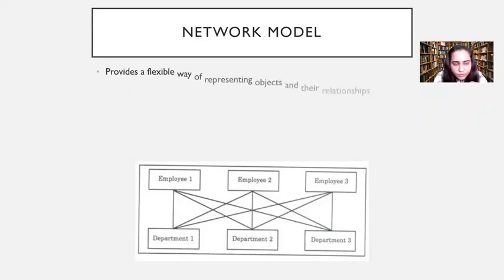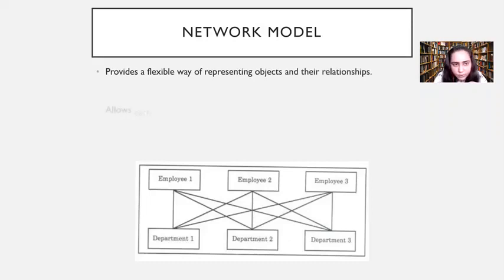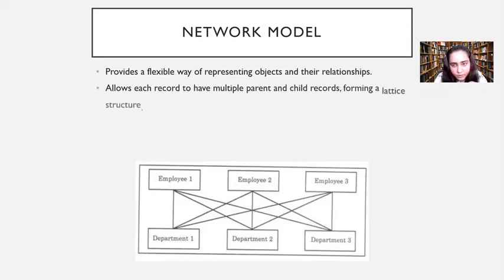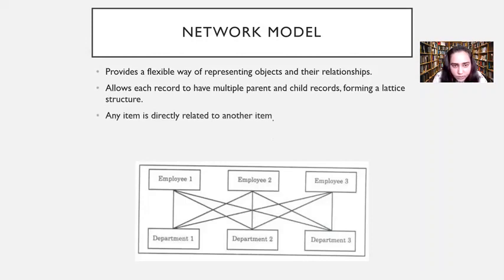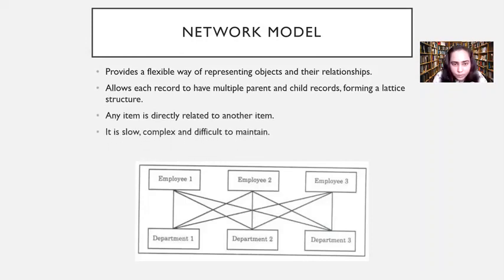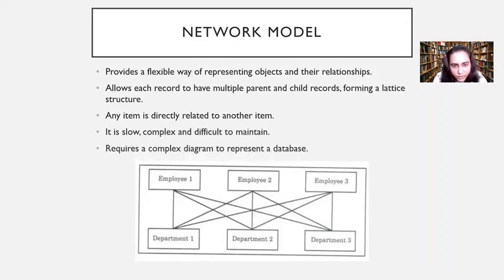The network model provides a flexible way of representing objects and their relationships. It allows each record to have multiple parent and child records, forming a lattice structure. Any item is directly related to another item. However, it is slow, complex, and difficult to maintain.